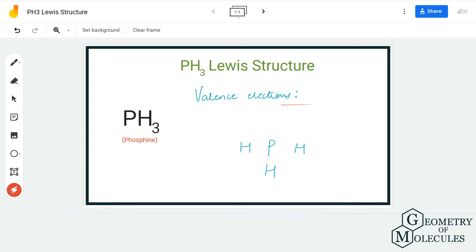To determine its Lewis structure, we will first determine the total number of valence electrons for this molecule. Here we have one phosphorus atom which has five valence electrons in its outer shell, and we have three hydrogen atoms, each with one valence electron.